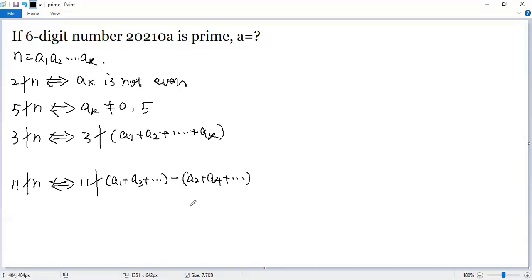Okay, now the given number is a prime number, that means 2 is not a factor of that number. That means from here, we know the last digit A cannot be 0, 2, 4, 6, 8.